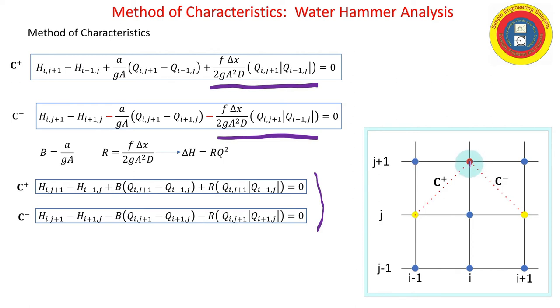The unknowns are the piezometric head and the flow. We know everything at time level j, and we take these equations, which are valid along the c-plus and the c-minus characteristics. We have two equations, two unknowns. We solve for the head and the flow.